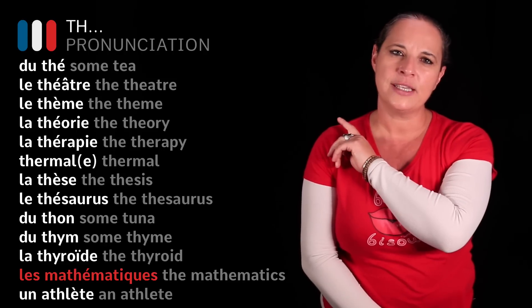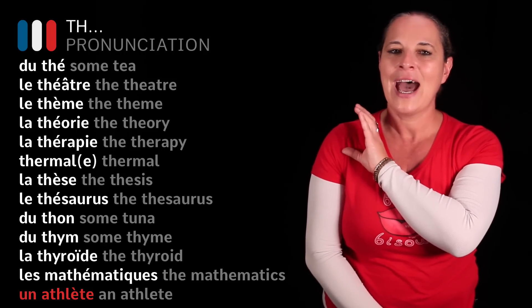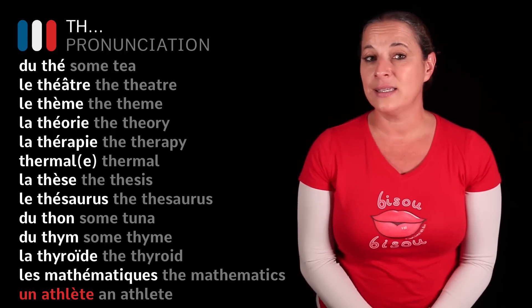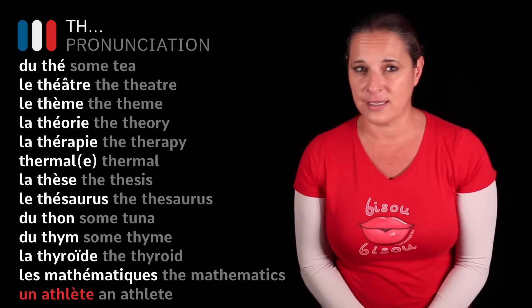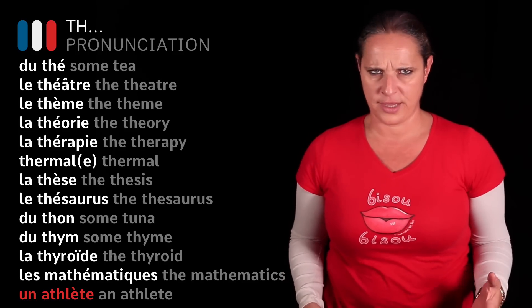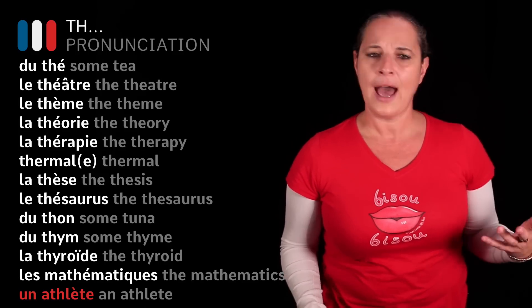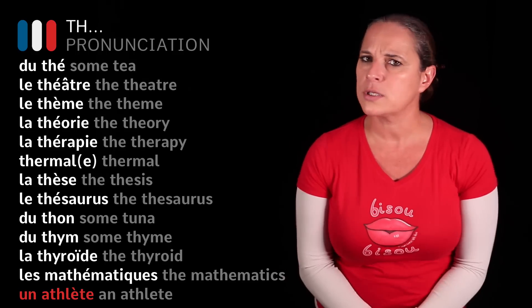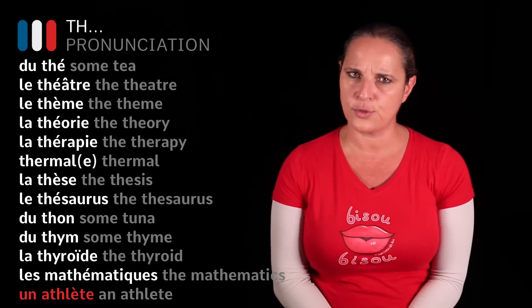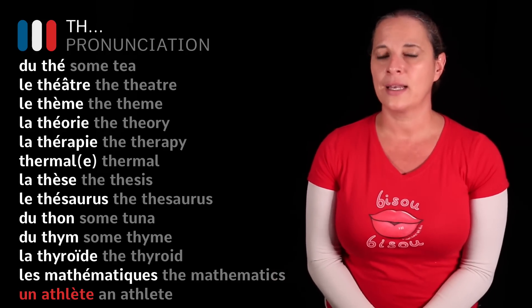And here's another word: ATHLÈTE. ATHLÈTE — an athlete is ATHLÈTE. AN ATHLÈTE. God, I have a problem pronouncing the English word, I tell you! Now, an ATHLÈTE.